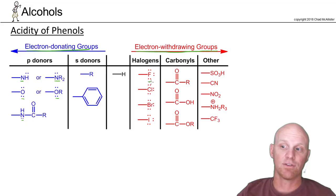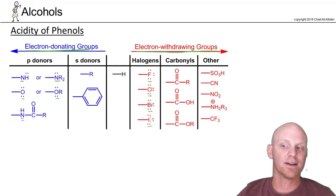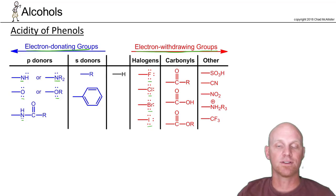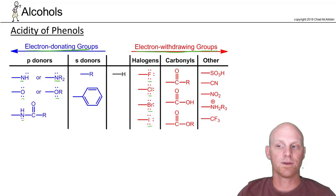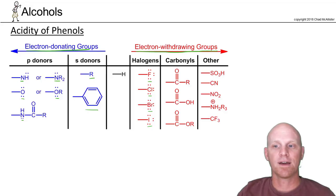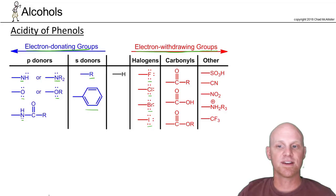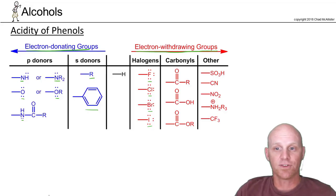Halogens also have lone pairs, but they're even more electronegative — fluorine especially — so they're more of a withdrawing group than donating. The larger halogens (chlorine, bromine, iodine) are so large they don't form good pi bonds due to poor side-to-side P orbital overlap, so they don't donate much by pi donation either — they're just withdrawing groups. A plain carbon chain or aromatic group attached to the ring donates by hyperconjugation, not as strong as nitrogen or oxygen, but still a donating group.